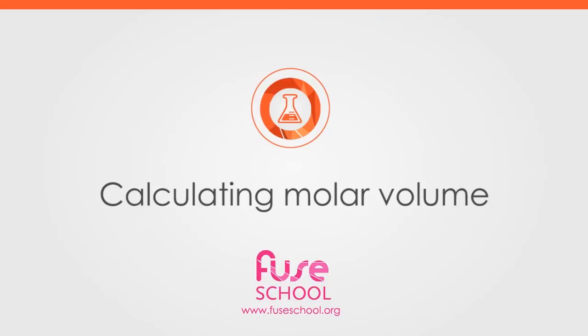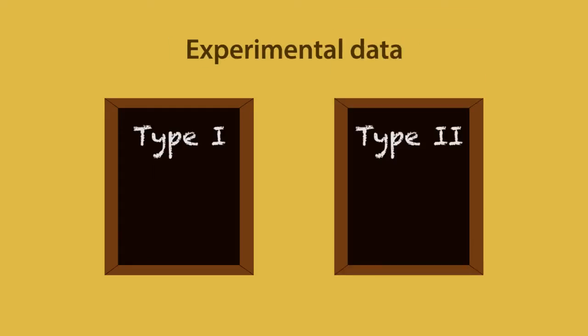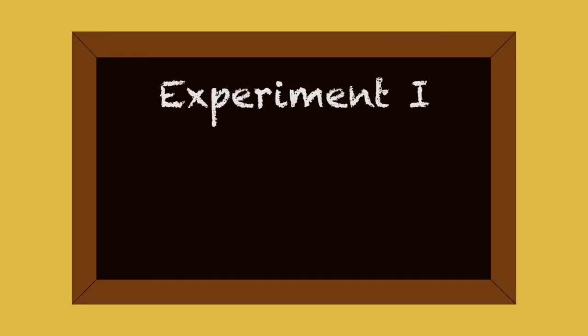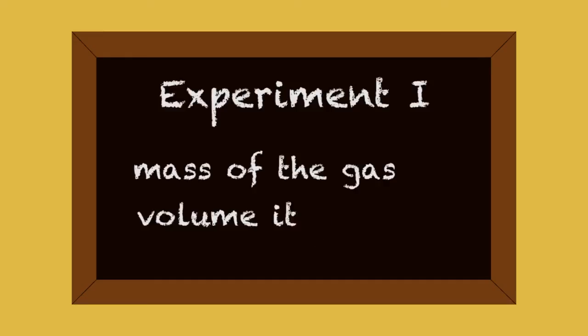In this video we are going to learn how molar volumes of gases can be calculated from experimental data. There are two types of experimental data that can be used to do this, along with example calculations that can be applied to any other situation. In the first experiment you can measure the mass of the gas and the volume it produces.